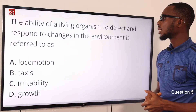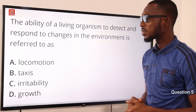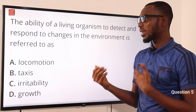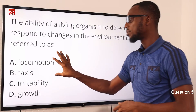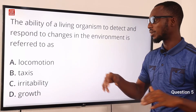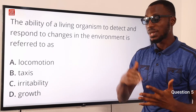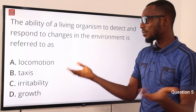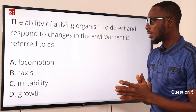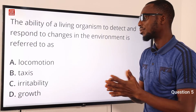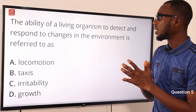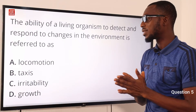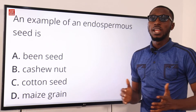Question 5: The ability of a living organism to detect and respond to changes in the environment is referred to as irritability — response to stimuli, which can be internal or external. Locomotion refers to movement. Taxes include phototaxis (response to light) and chemotaxis (response to chemicals). Growth is an increase in size. The ability to detect and respond to changes in the environment is irritability, found in option C.